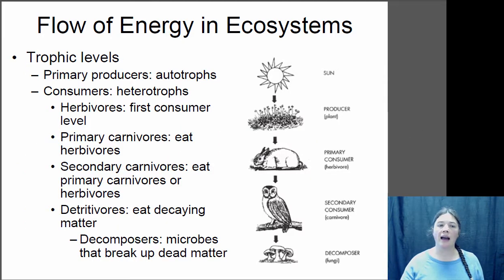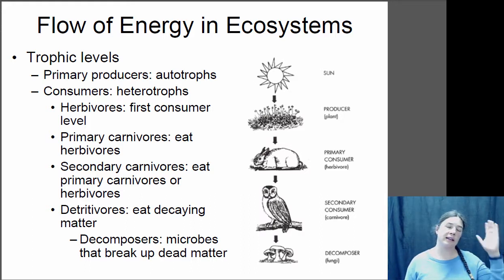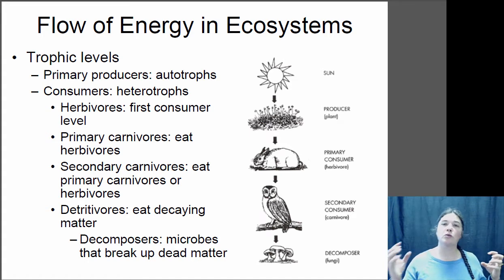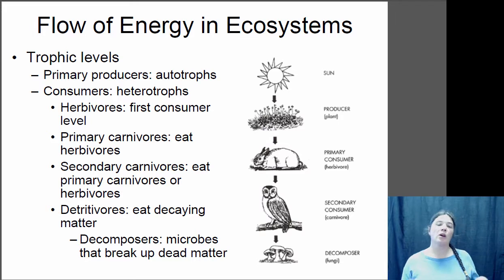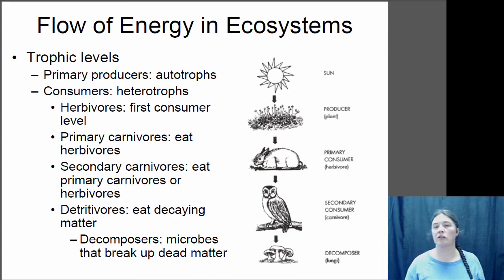If we look at what's happening, energy coming in from the Sun is being trapped by what we call primary producers — those are our autotrophs — the organisms that can take sunlight energy and use it to make chemical energy in the form of carbon-based compounds. So that's where the energy for living organisms primarily comes from: solar energy trapped by autotrophs as chemical energy.